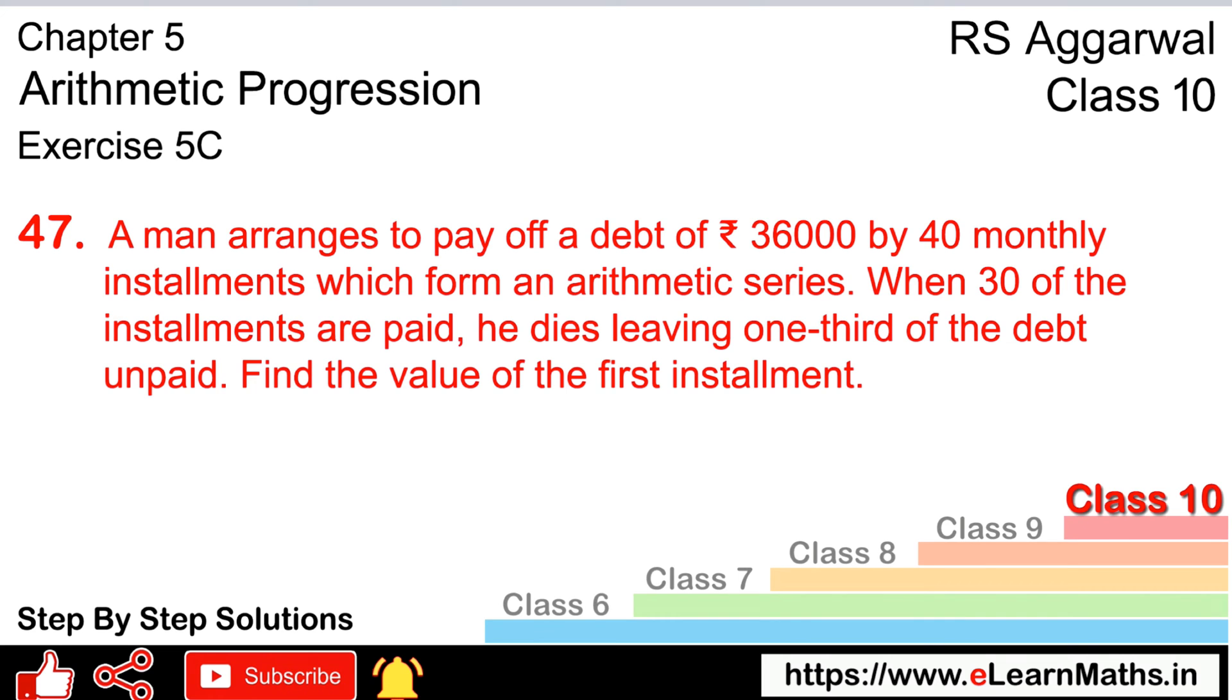Let's do question number 47 of exercise 5C, Arithmetic Progression. A man arranges to pay off a debt of rupees 36,000 by 40 monthly installments which form an arithmetic series. When 30 of the installments are paid, he dies leaving one-third of the debt unpaid. Find the value of the first installment.